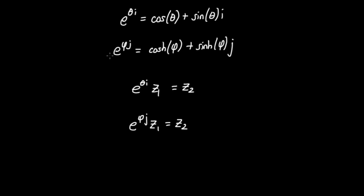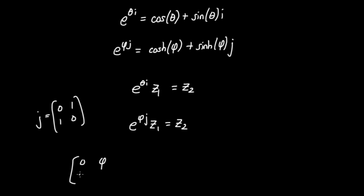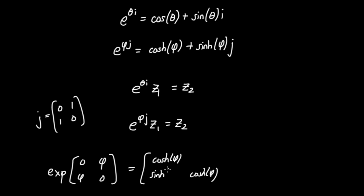The last thing I'll do in this video is show how to write this equation in matrix form. I take φ times J — remember J in matrix form is [[0, 1], [1, 0]] — so multiplying by the scalar φ gives [[0, φ], [φ, 0]]. The matrix exponential of this equals the following split complex number: cosh(φ) plus sinh(φ)J, which in matrix form has cosh(φ) along the diagonal and sinh(φ) along the anti-diagonal. I encourage you to stay tuned for the next video on the Lorentz boost where we apply these concepts. Thank you for watching.